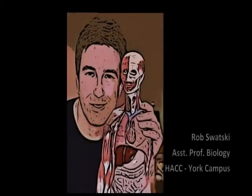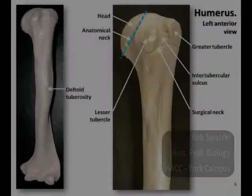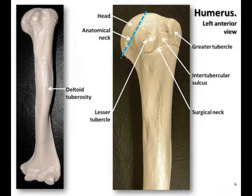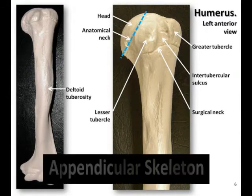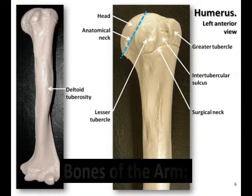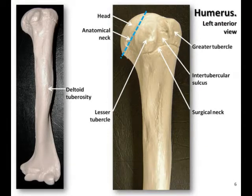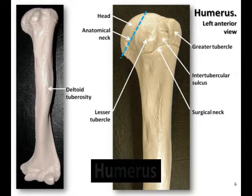Hello, this is Rob Swatsky from the York campus of Harrisburg Area Community College in York, Pennsylvania. In this podcast, I'll be continuing my review of the bones of the appendicular skeleton, focusing on the bones of the arm, specifically the location and surface landmarks of the humerus.